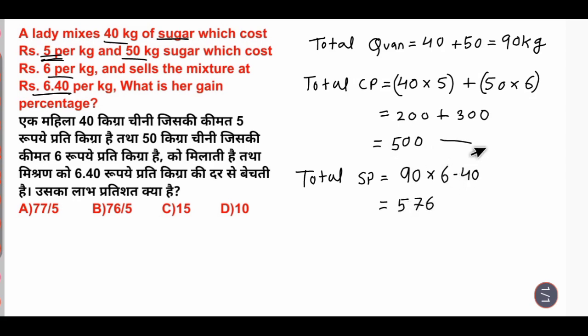Now look at total SP equals to how much. What will be the profit? The difference will be 76.